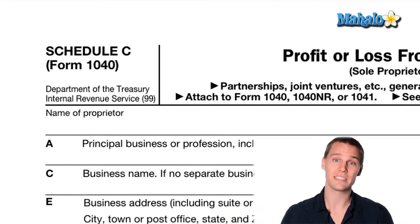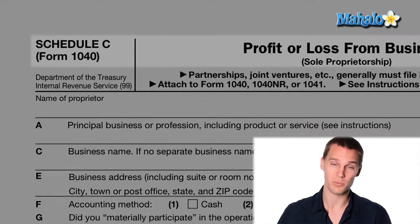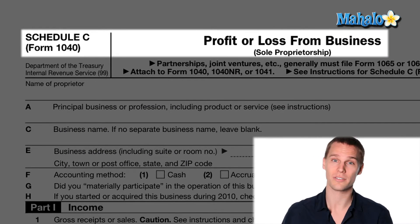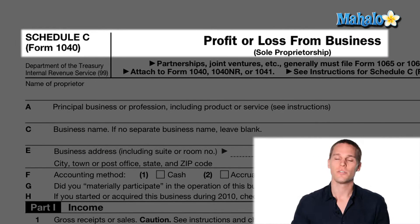Now, if you were an independent contractor, received a 1099 miscellaneous form, you were self-employed, or even the sole provider of a small business, the IRS considers you to be running your own business, and you need to fill out Schedule C: Profit or Loss from a Business.